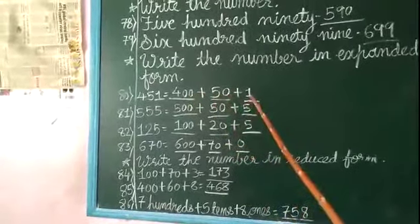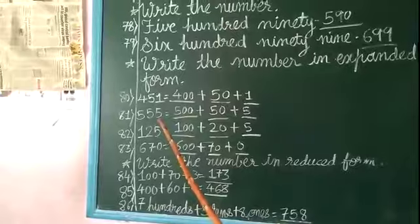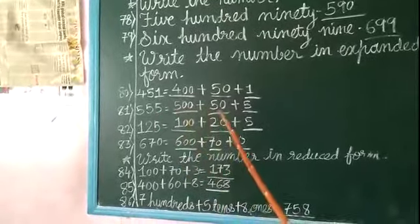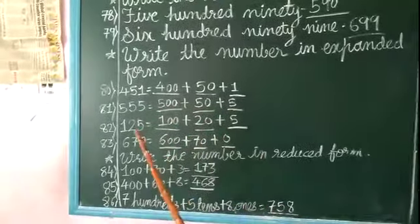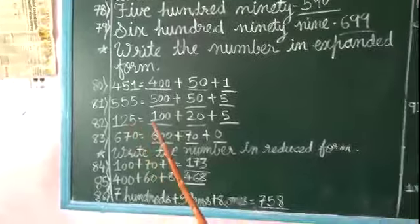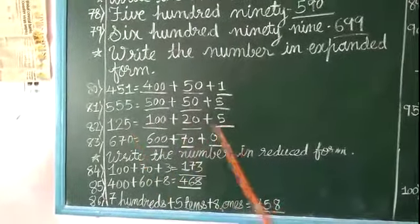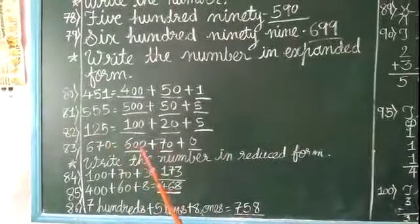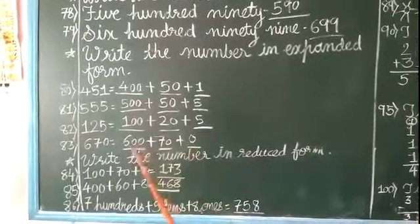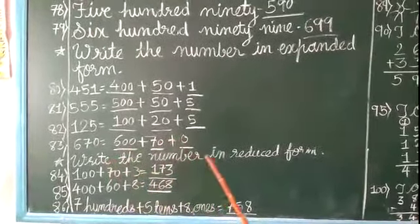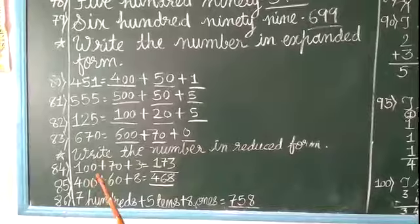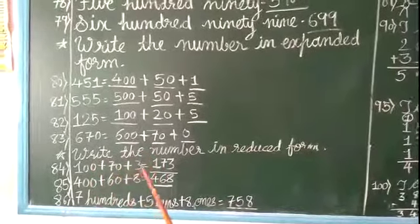plus 1 equals 451. 555 is given, so 500 plus 50 plus 5. Number 125 is given, so 100 plus 20 plus 5. 670: 600 plus 70 plus 0, so 670. Write the number in reduced form. Reduced form means you're given the expanded form and we have to make it reduced form.